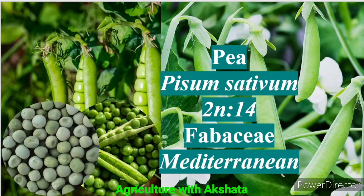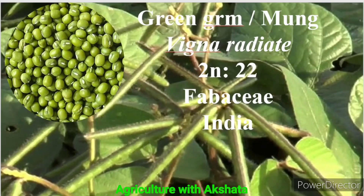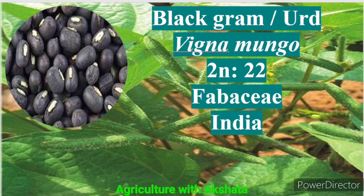Pea: Pisum sativum, 2n = 14, Fabaceae family, origin Mediterranean region. Green gram also called Moong: Vigna radiata, 2n = 22, Fabaceae family, origin India. Black gram also called Urad: Vigna mungo, 2n = 22, Fabaceae family, origin India.